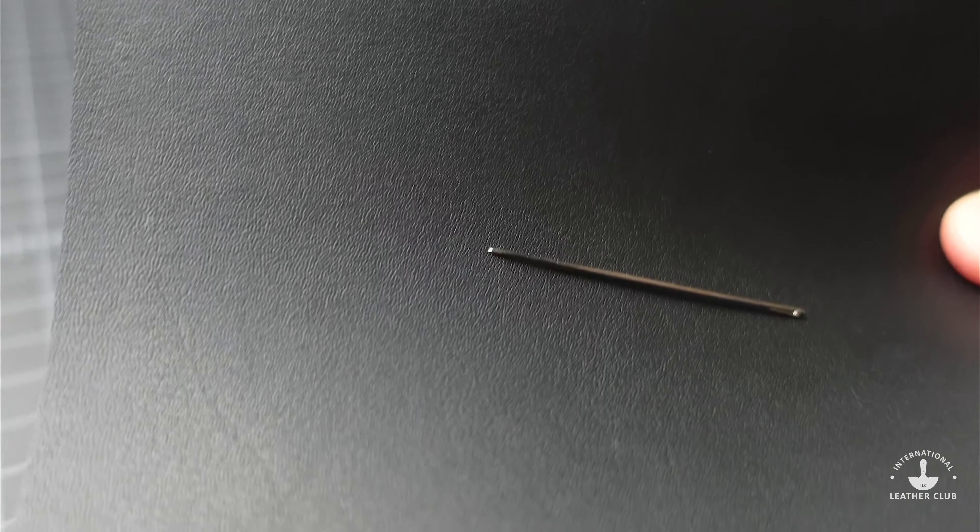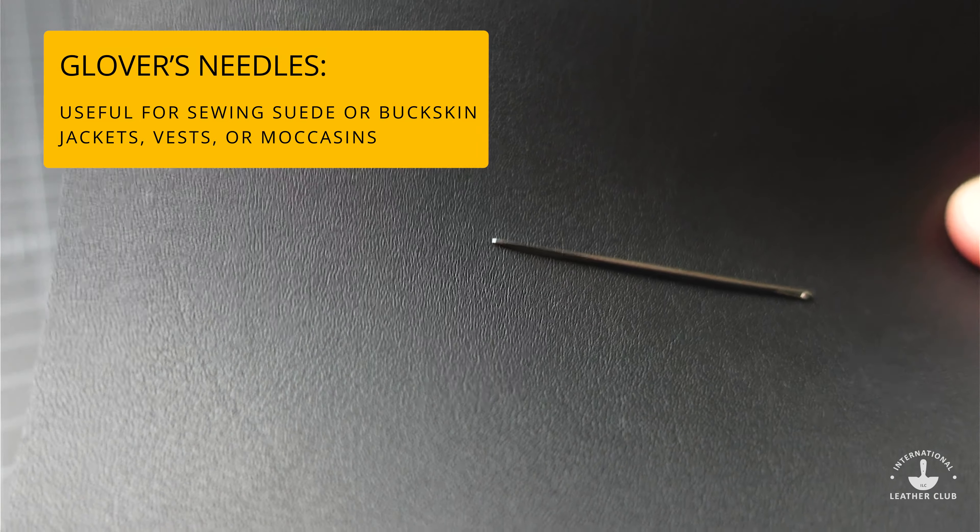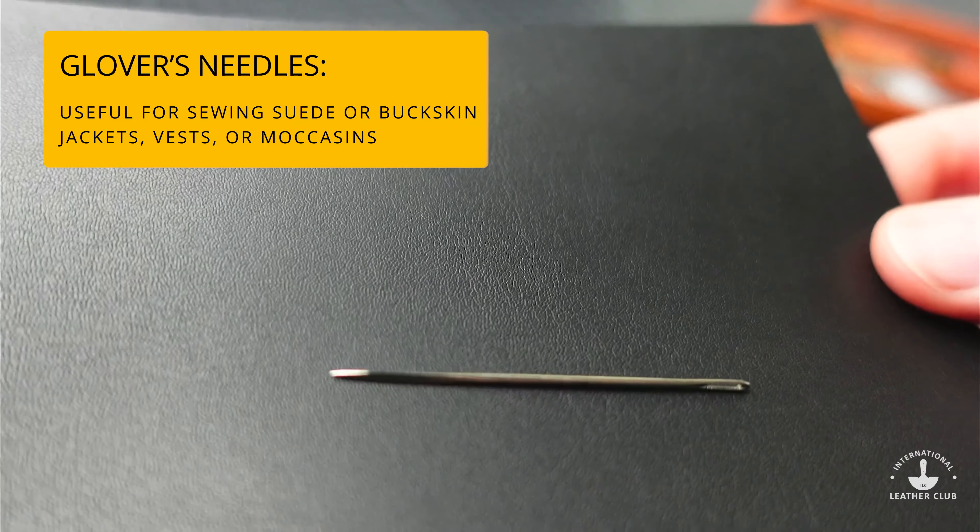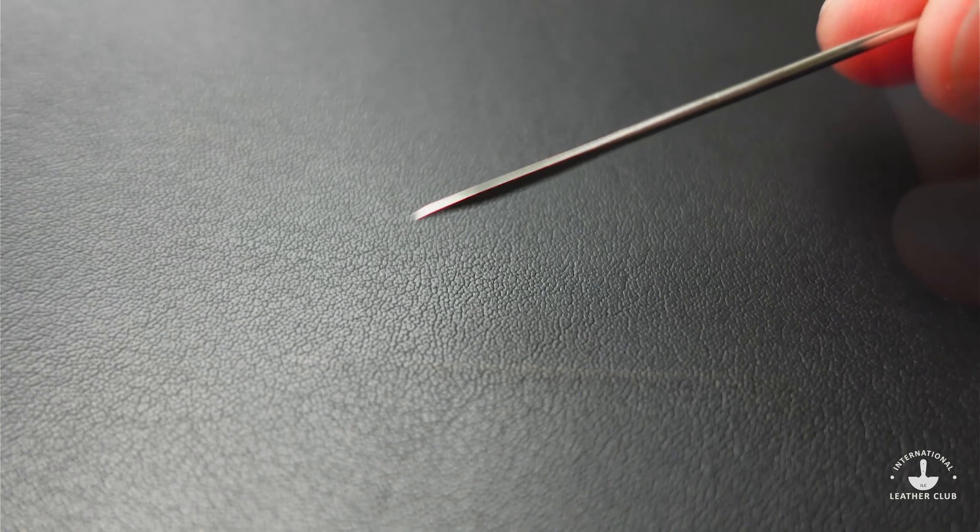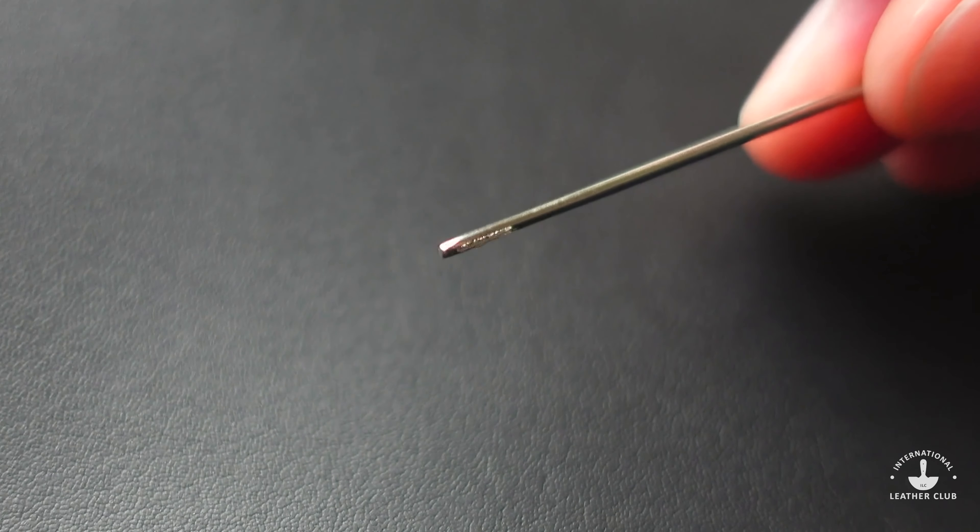They are generally used for sewing hide and buckskin articles together and useful certainly for gloves, jackets, vests, moccasins, and similar accessories. So here we can see that triangular tip and then here we can see the eye.